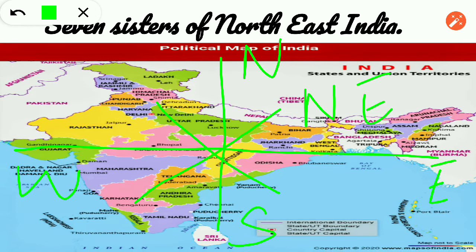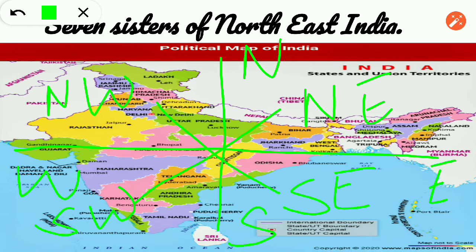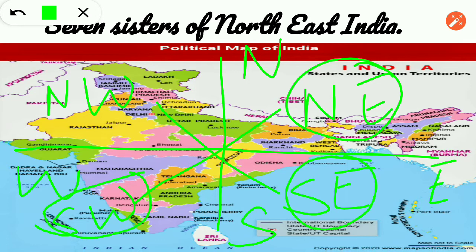South and east is southeast, south and west is southwest, and north and west is northwest. The intermediate directions are northeast, southeast, southwest, and northwest. North and south are the starting points because these are our polar regions.